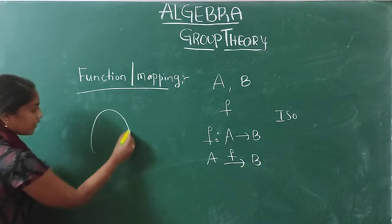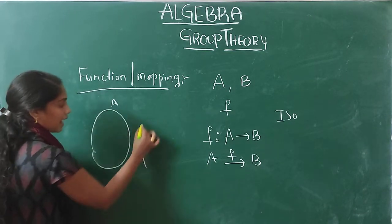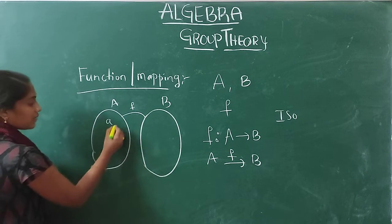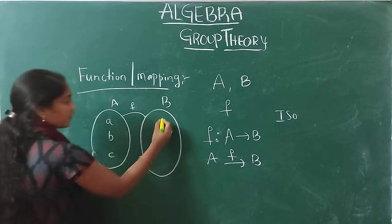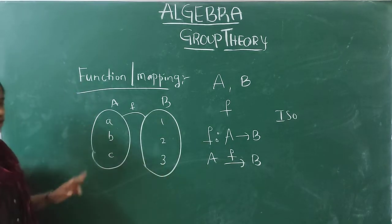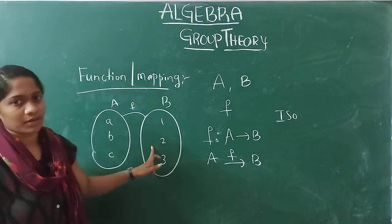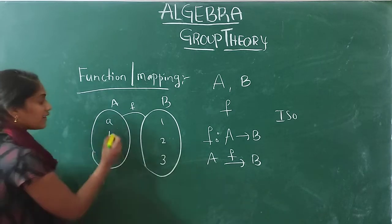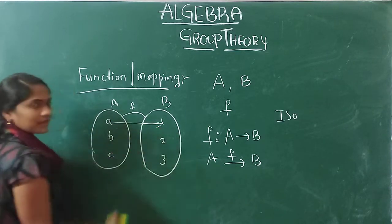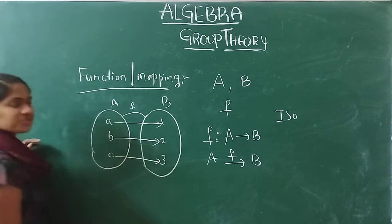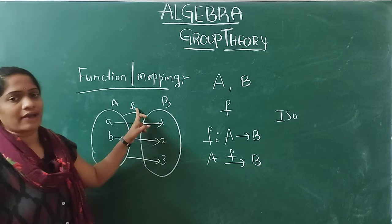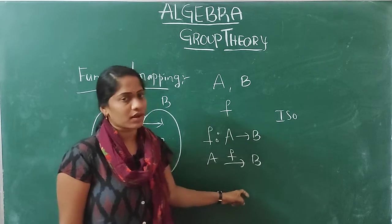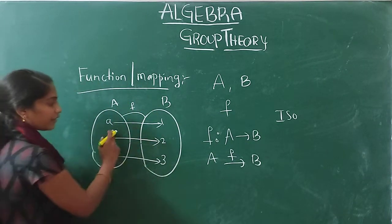Let us look at a diagram example to make it clear. Take a non-empty set A and another non-empty set B. Let us take elements a, b, c in set A and 1, 2, 3 in set B. Every element of A should associate with every element of B — then this correspondence f is known as a function. You can represent it using a mapping diagram.